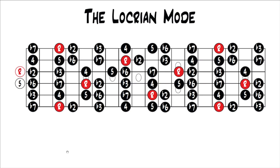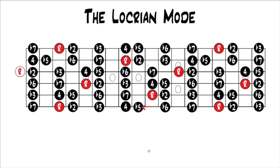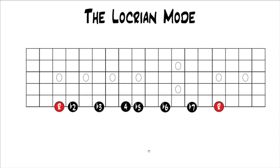To get to the Locrian mode, we're going to start with the Phrygian mode because there's only one note difference. The Phrygian mode is root, flat 2, flat 3, 4, 5, flat 6, flat 7 — that's what's on your screen right now. To get to Locrian from Phrygian, all you have to do is lower the fifth down half a step to the flat 5. So the Locrian mode is root, flat 2, flat 3, 4, flat 5, flat 6, flat 7.